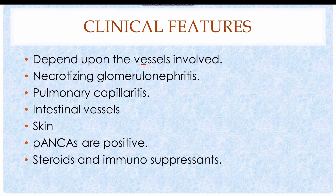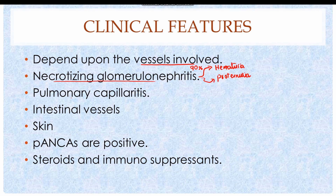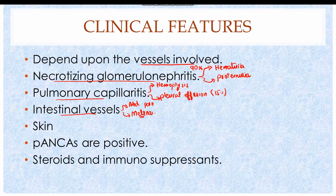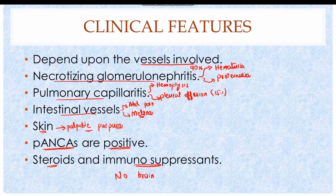The clinical features depend upon the blood vessel involved. In case of renal blood vessels, there is necrotizing glomerulonephritis, characterized by hematuria and proteinuria. Involvement of lung capillaries causes pulmonary capillaritis, which causes hemoptysis — coughing of blood — and there might also be pleural effusion in almost 15% of cases. Intestinal vasculitis results in abdominal pain and melena, meaning presence of altered blood in the stool. Involvement of skin capillaries results in palpable purpura. Diagnosis is established on the clinical picture, and ANCA antibodies are often positive. The disease has a good response to steroids and immunosuppressants unless there is involvement of the brain capillaries.